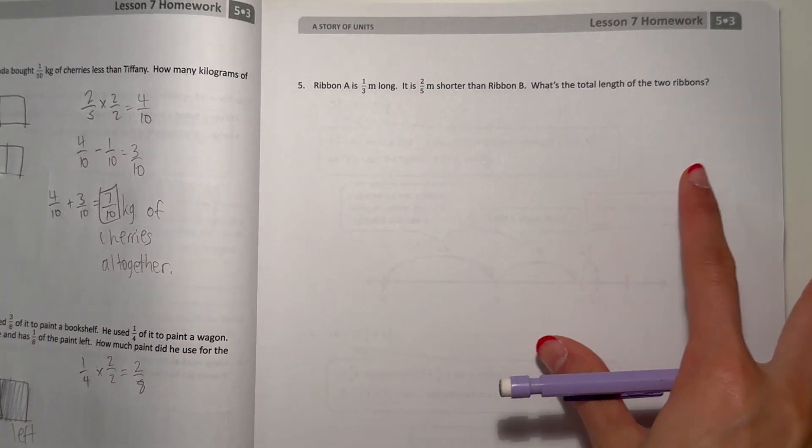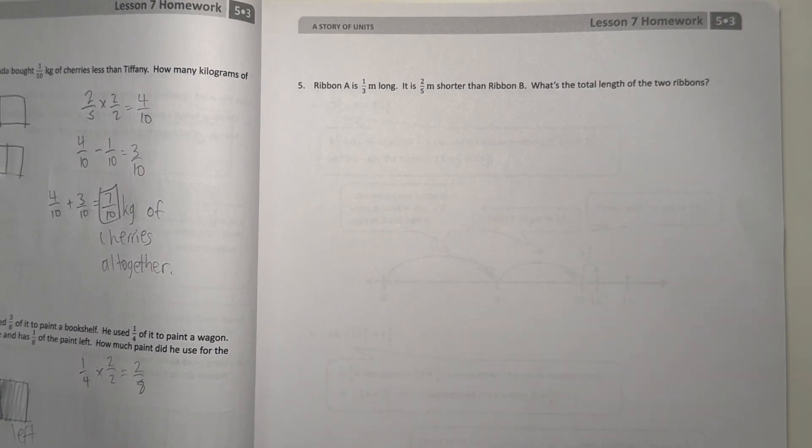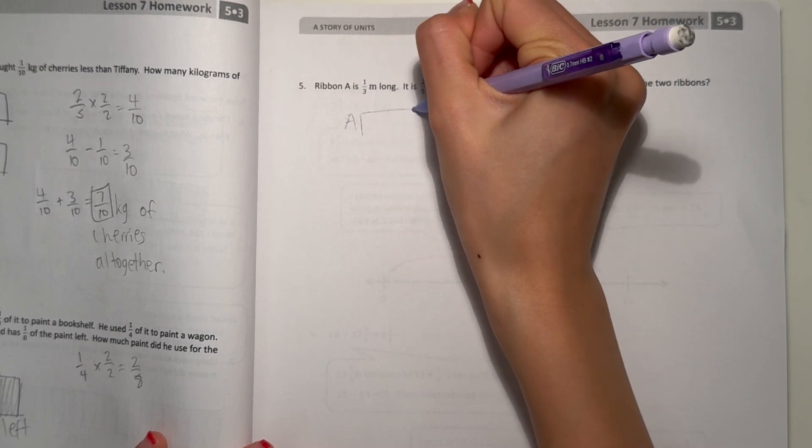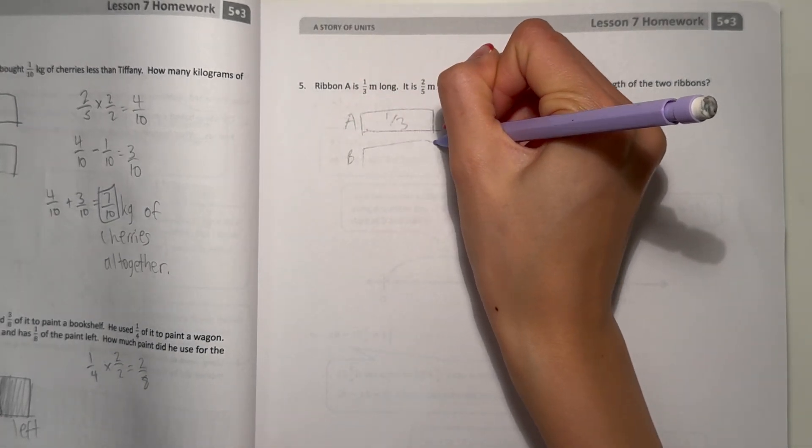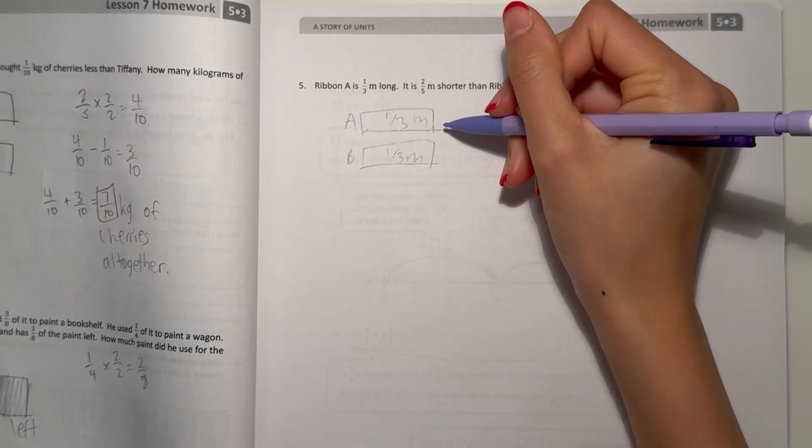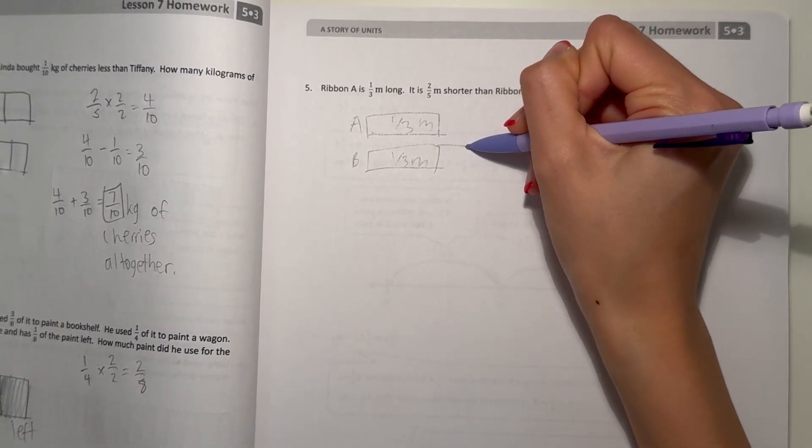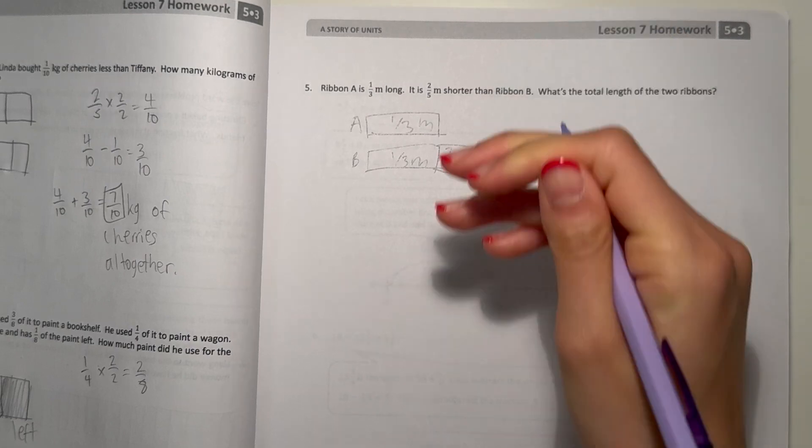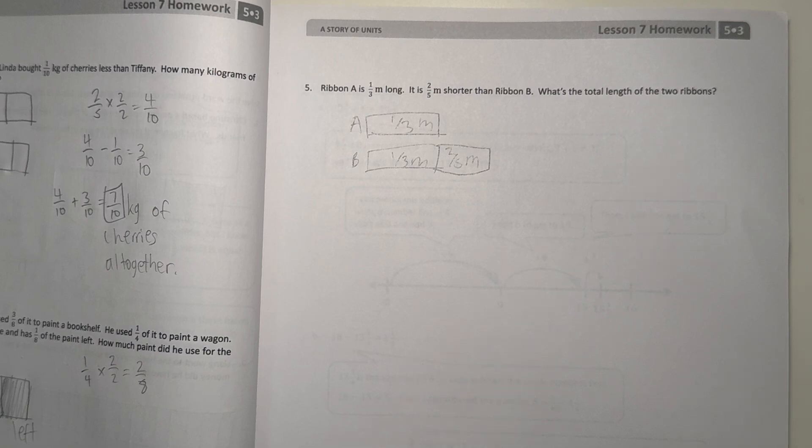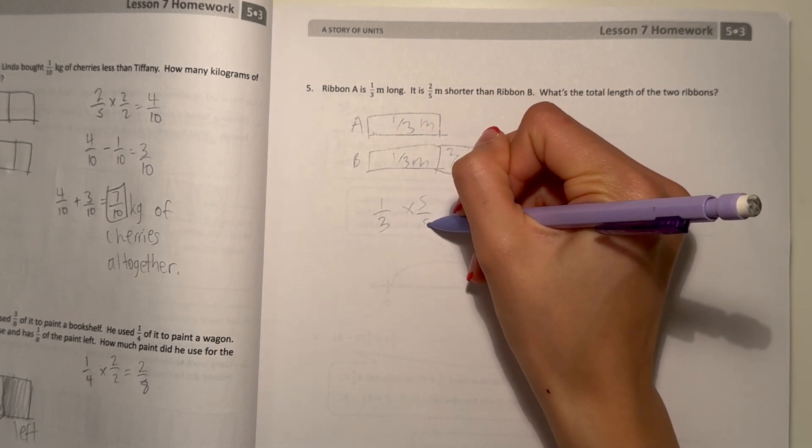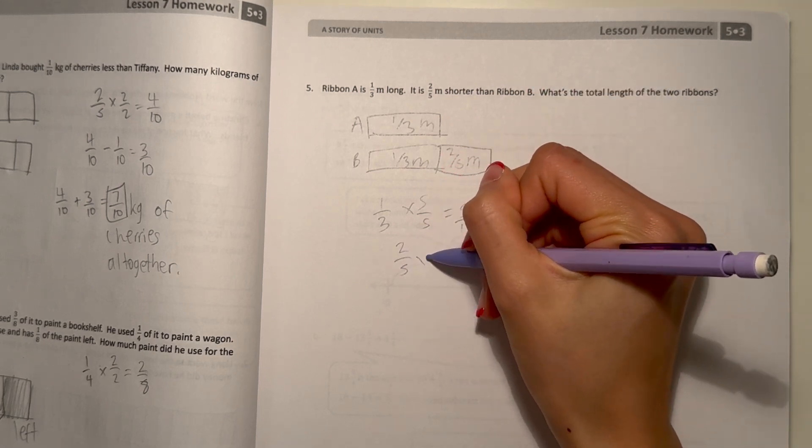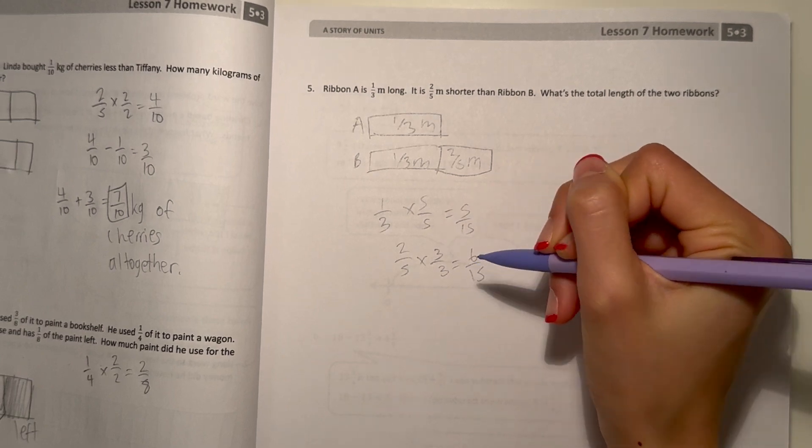Number five. Ribbon A is one-third meter long. It is two-fifths meters shorter than ribbon B. What's the total length of the two ribbons? So A is one-third meter. And it's two-fifths meters shorter than ribbon B. That means ribbon B is two-fifths of a meter longer. So let's find B first. One-third plus two-fifths. First, multiply this by five. That's five-fifteenths. And now the two-fifths by three, six-fifteenths. So now we have the same denominator.